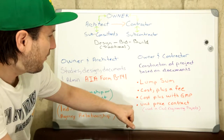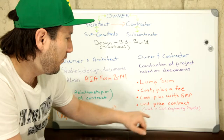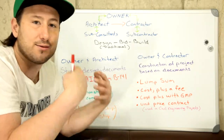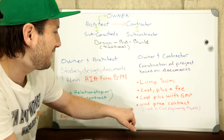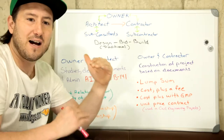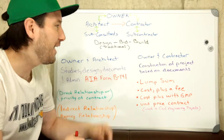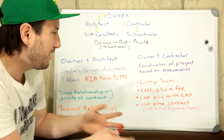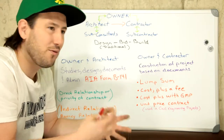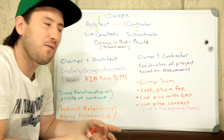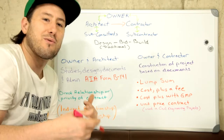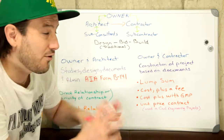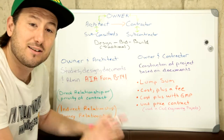The unit price contract is used mainly in civil engineering projects like bridges and tunnels. It is exactly what it says: there will be a table of values, and the owners will decide which portions of the work they want the contractor to do based on their unit rates. The unit price contract is used in other areas as well, but that's basically the overview.